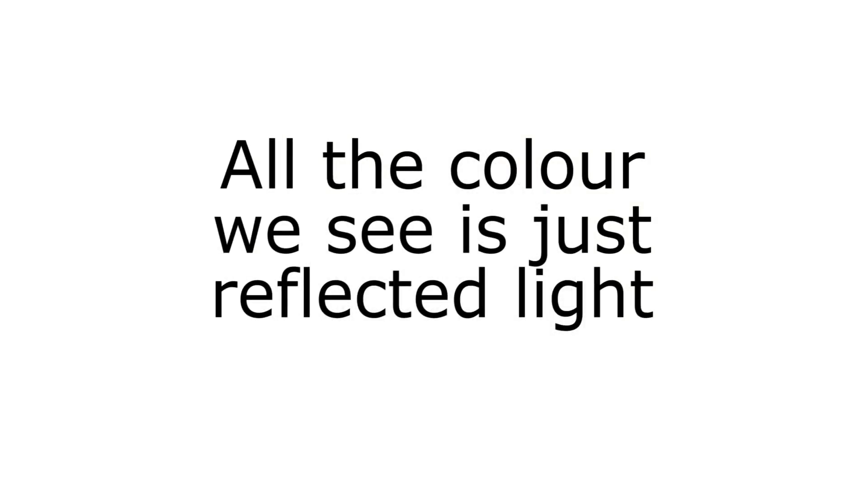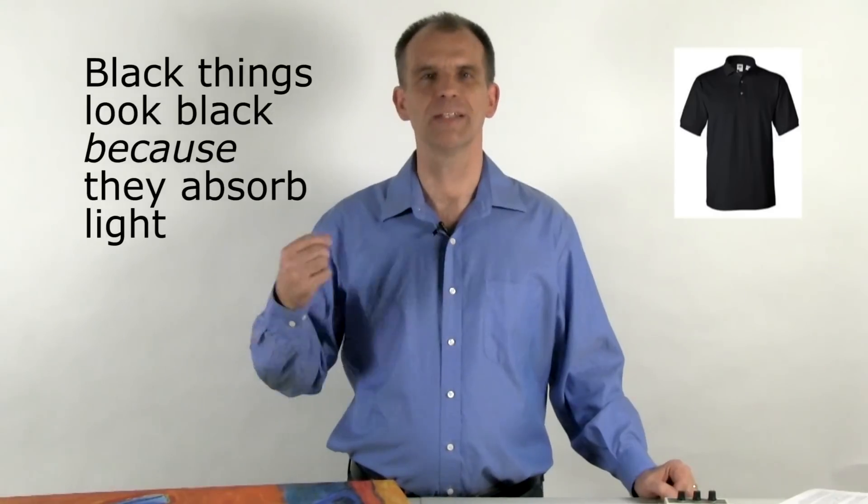Here's something that you probably already know: if you have black clothing, we have the idea that black absorbs light and white reflects light. But think about it a little bit differently. Black is black because it absorbs light, and white is white because it reflects light.